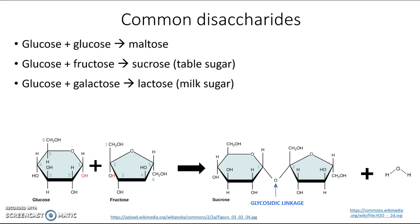Another common disaccharide is lactose, made by combining glucose and galactose. Lactose is the milk sugar that many people cannot digest. These three disaccharides are starred — you need to know which monosaccharides combine to make each one and what their formulas are. We already calculated maltose's formula, and you can use the same method for sucrose and lactose.